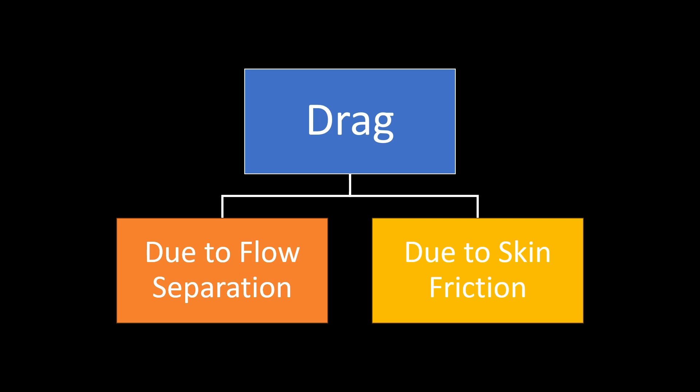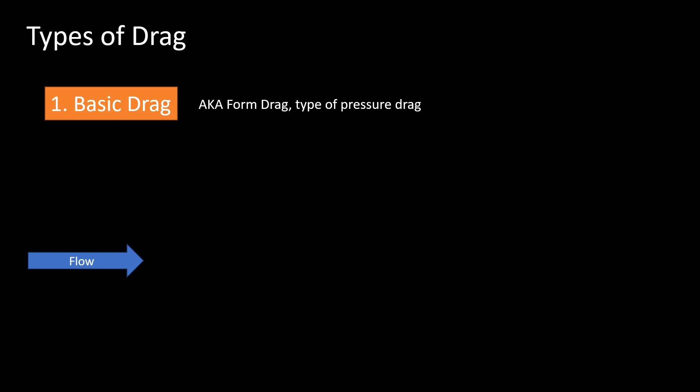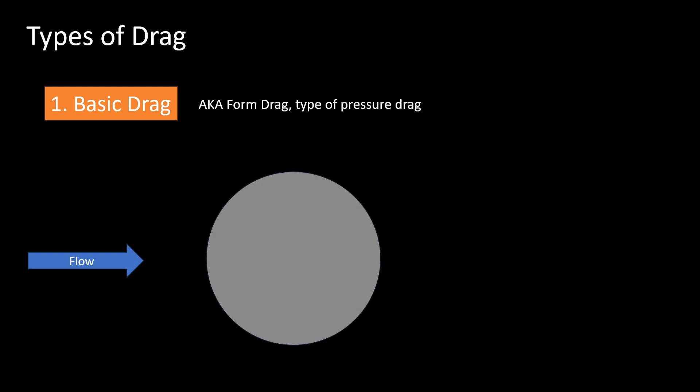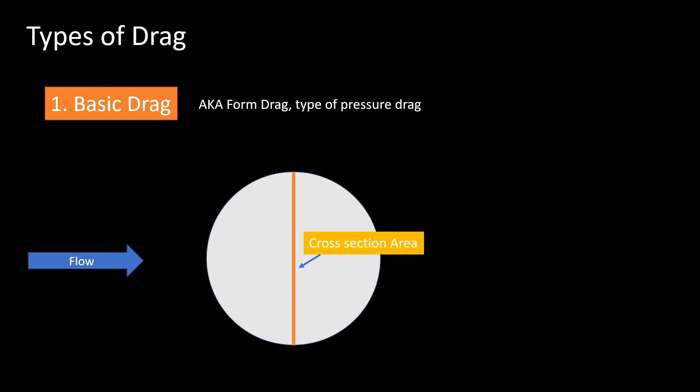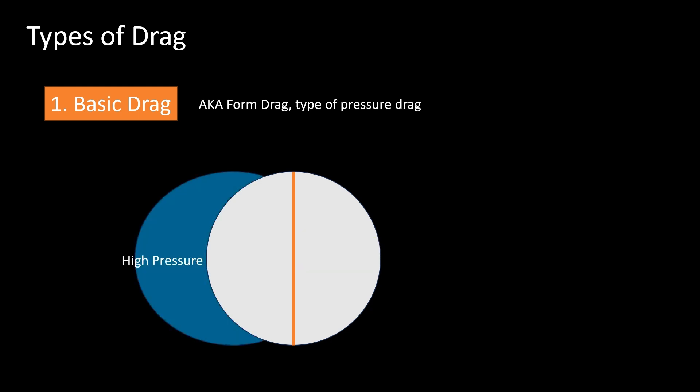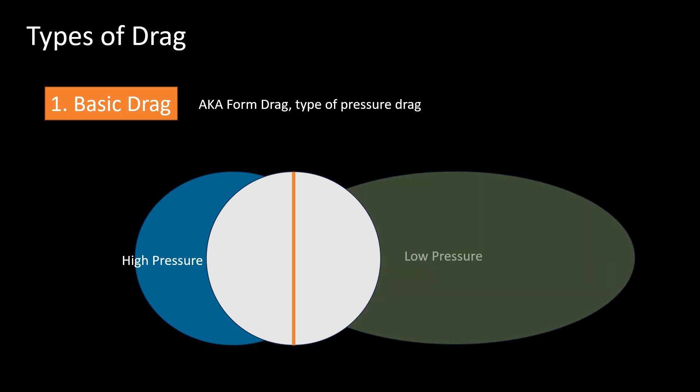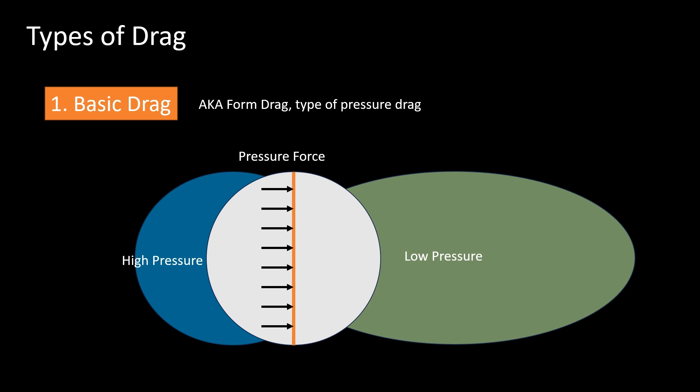Up first is the basic drag, also known as form drag, and it is a type of pressure drag. It is caused by the resultant pressure distribution over the surface of the body. It can be thought of as the component of the pressure force parallel to the tangent to the flight path. Imagine an object moving through air — there is a difference in the pressure acting along the surface. The drag force is the product of the pressure acting on a cross-sectional area of the body, normal to the flight path.